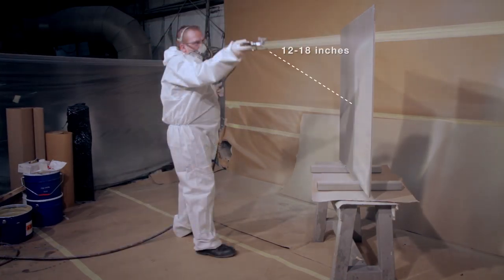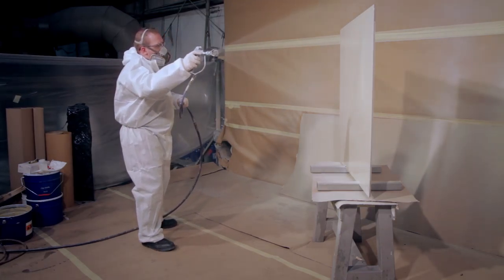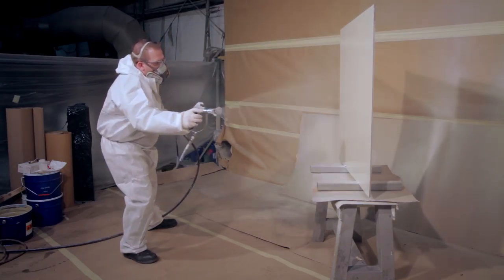Once the applicator has achieved good surface wetting, the distance of the spray gun to the surface is extended to approximately 24 to 36 inches. This avoids exaggerating orange peel and gives more even coverage.